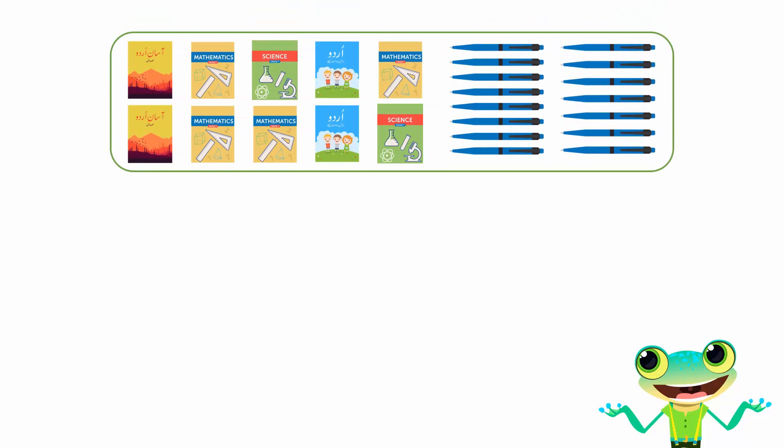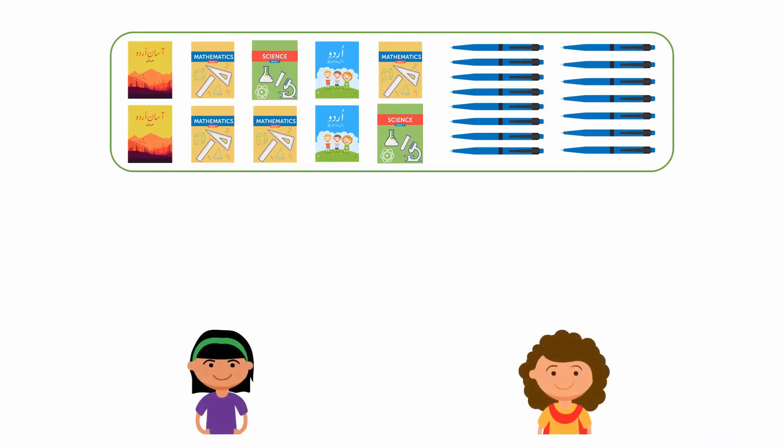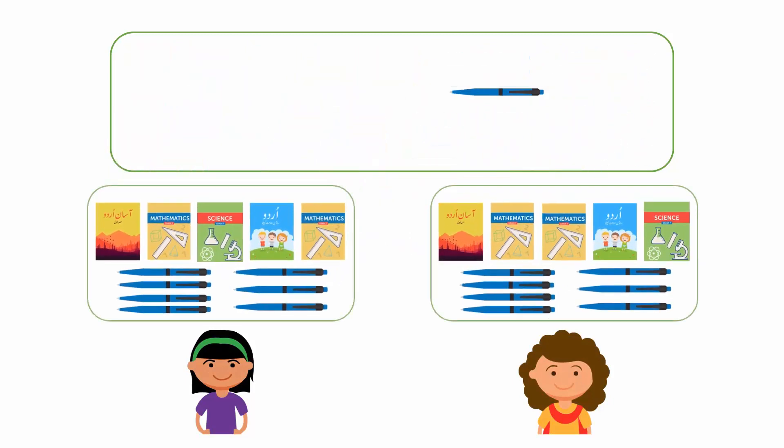Jamal has 10 books and 15 pens. He wants to distribute these items to the maximum number of students so that each student gets an equal number of books and pens. Let the maximum number of students be two — then each student can receive five books, but we can't distribute pens equally.